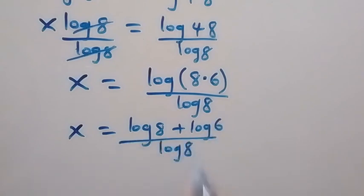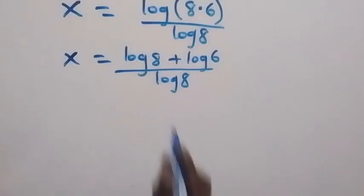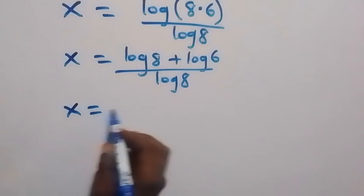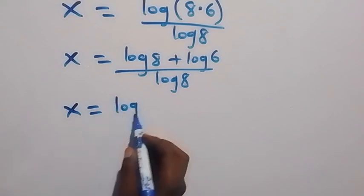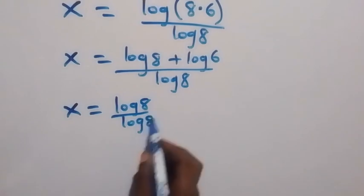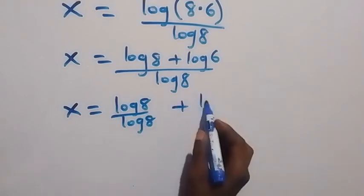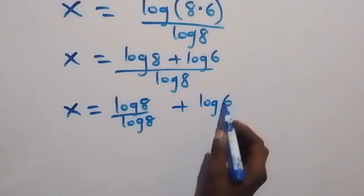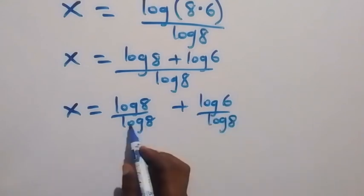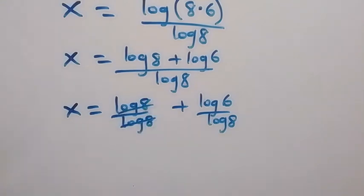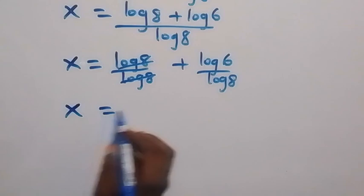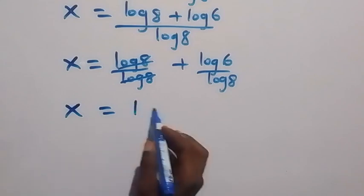From here we can separate this fraction into two fractions and we have x equals log 8 over log 8, then plus log 6 over log 8. From here, log 8 over log 8 cancels out and we are left with x equals one plus log 6 over log 8.